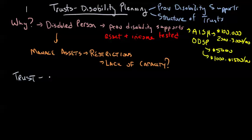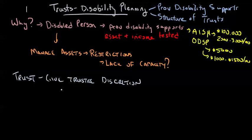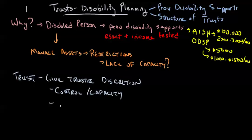This is where we're going to potentially employ a trust. What we're going to do is give a trustee discretion, and essentially that means we take control away from that disabled person. That may solve the control or capacity issue, and we may have also solved the income and asset test problems — although this varies from province to province.